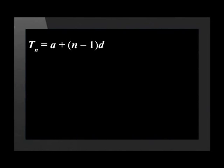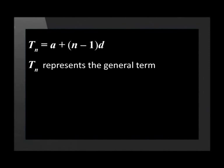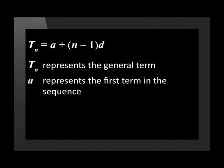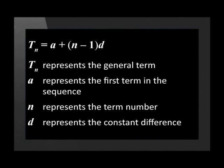Do you remember the formula we used to find the general term? The formula for the general term is Tn equals a plus, open brackets, n minus 1, close brackets, times d. Tn represents the general term, a represents the first term in the sequence, n represents the term number, and d represents the constant difference.